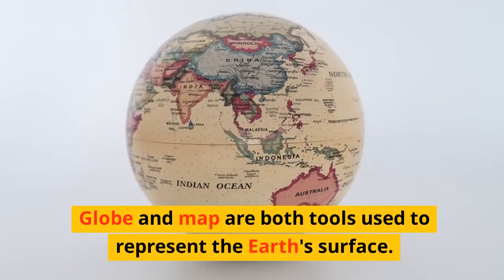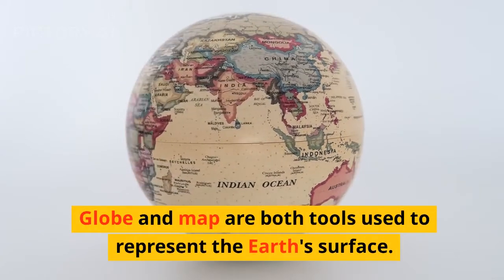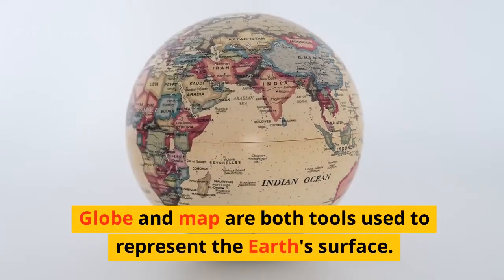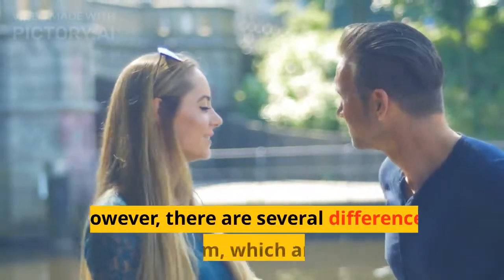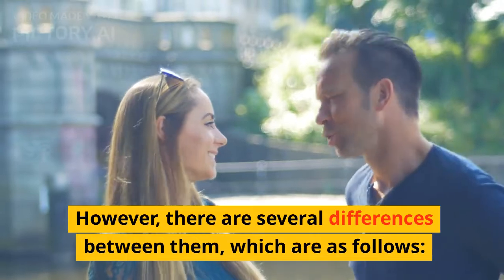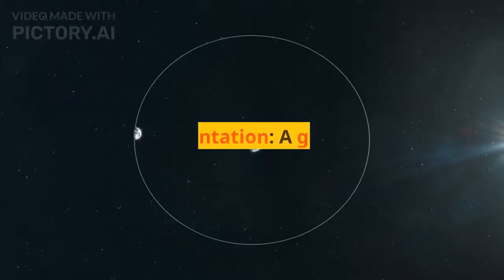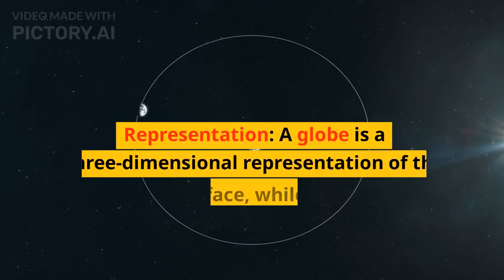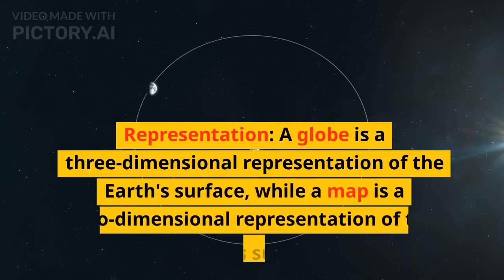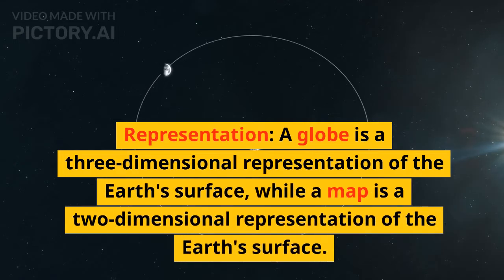Globe and map are both tools used to represent the Earth's surface. However, there are several differences between them, which are as follows. 1. Representation: A globe is a three-dimensional representation of the Earth's surface, while a map is a two-dimensional representation of the Earth's surface.